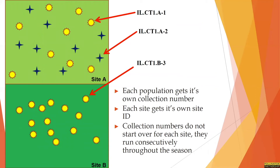Here's a graphic to help display this. In this case, we've got Illinois collection team one. They've done three collections from two different sites. You can see that there are two different species at site A. Illinois collection team one went to their first site of the season — site A — and did their first collection. They then later went back to that same site and collected from a different species, so the collection site is the same but the collection number has sequentially gone up. Then they discovered another population of their yellow flower at a new site, which has become site B. It's their third collection of the season of a unique population, so it's Illinois collection team one, site B, collection three.